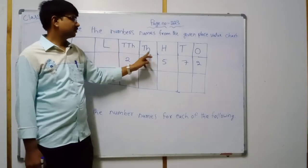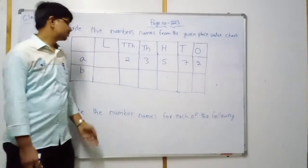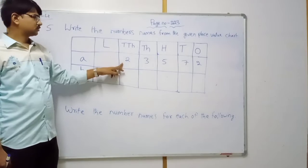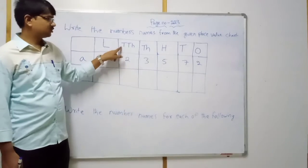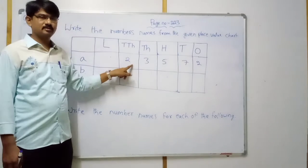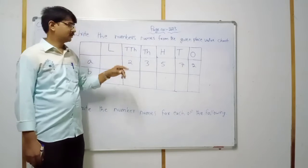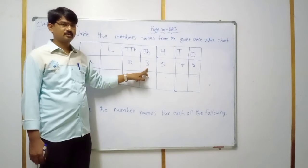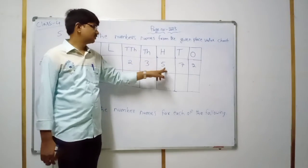So these are the places. Numbers are already given here and we need to write their number names. There is no number at the lakh place. At ten thousands place, 2 is there — so 2 into ten thousand equals twenty thousand.